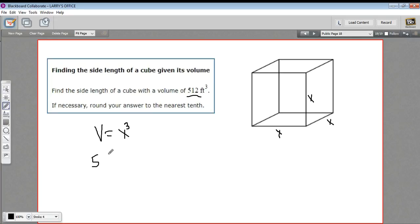So the volume of this cube is 512 cubic feet and that equals X cubed. What I want is the side length and X represents the side length, so to solve for X I would just need to take the cube root of both sides.